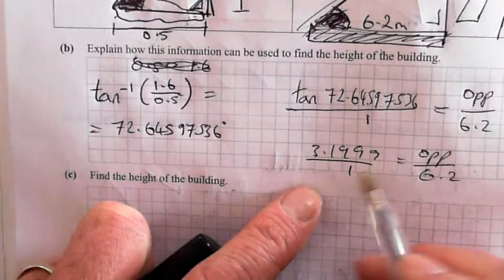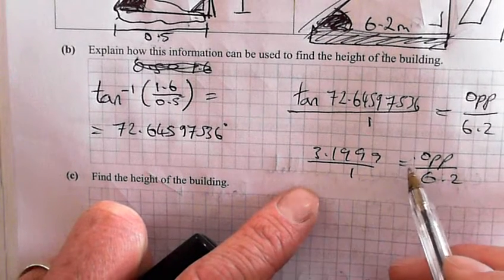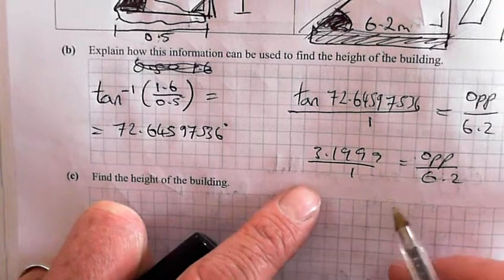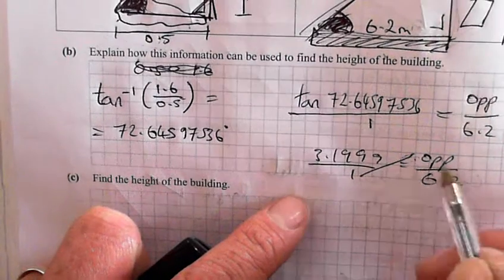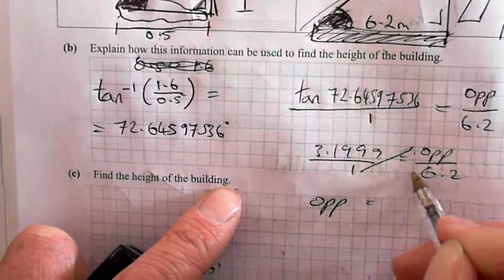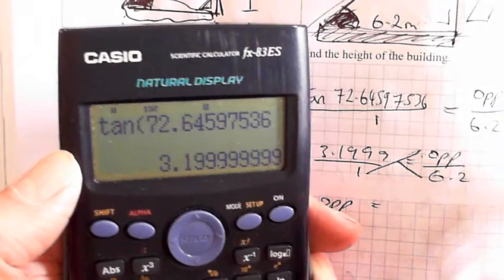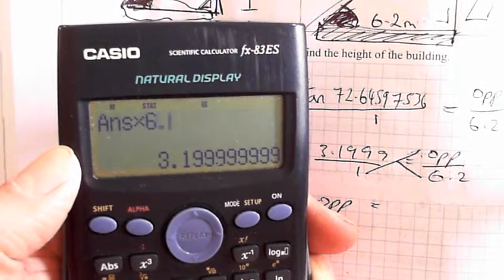Now what you do is you cross multiply. We have a fraction on this side, a fraction on that side and an equals in between. So two fractions and an equals in between, you can cross multiply. One times the opposite. And then multiply these two, 3.199999 times 6.2.